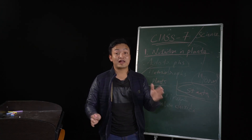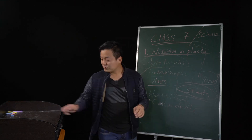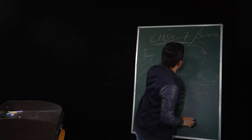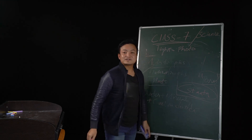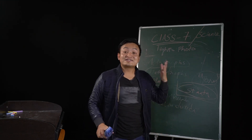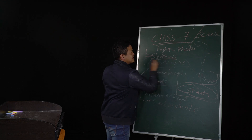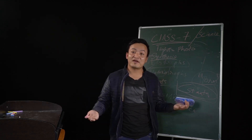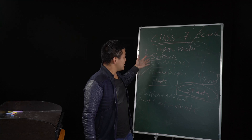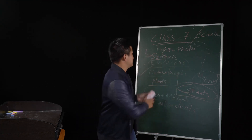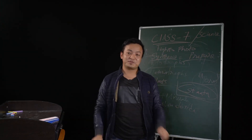Plants cannot prepare their food without the help of light. Light means photo. Synthesis means to prepare. So in science terms, we use the word synthesis to mean preparation. This is how plants prepare their food — through photosynthesis.